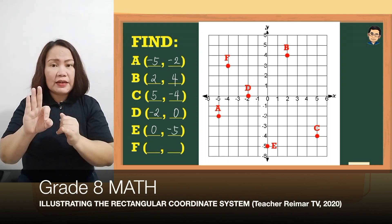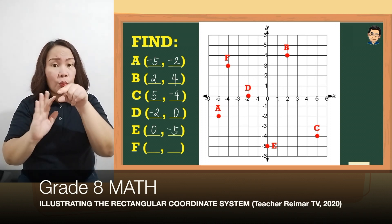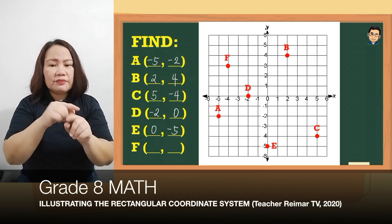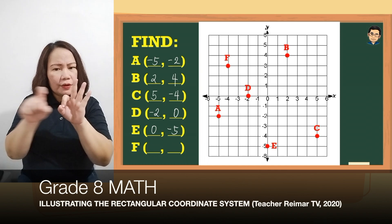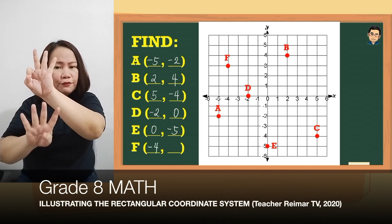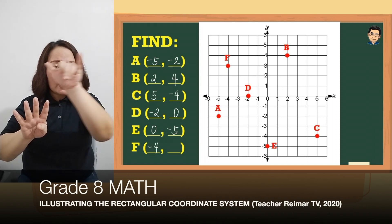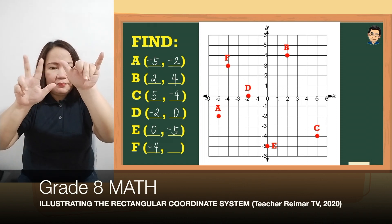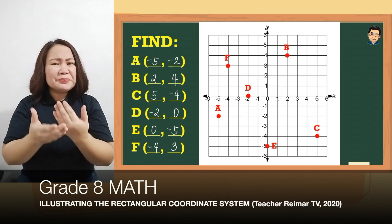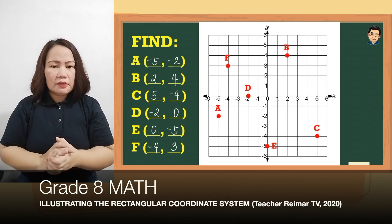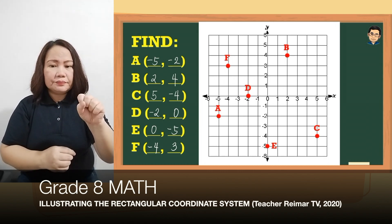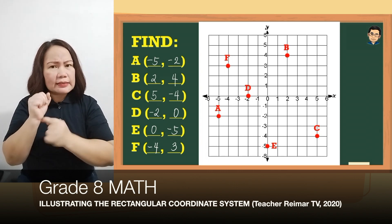Yung F ay nasa quadrant 2, na negative-positive po yung mga sign ng coordinates. So mag-start tayo sa negative 4 na nasa x-axis and then yung y-axis naman, yung coordinates niya is 3. So (-4, 3) ito po yung coordinates ng F. Tandaan laging nauna yung x-coordinate dun sa y-coordinate.